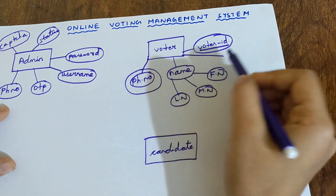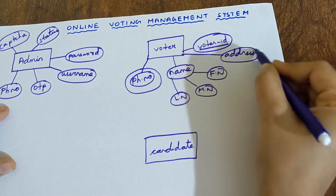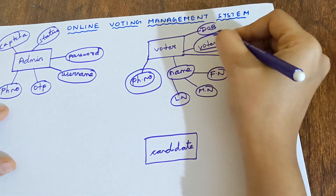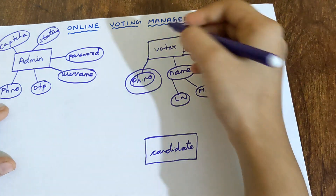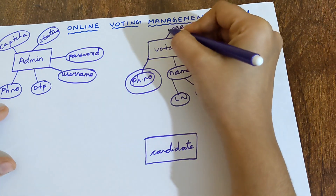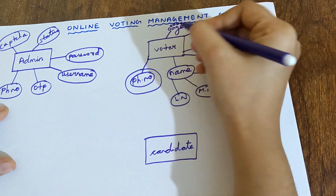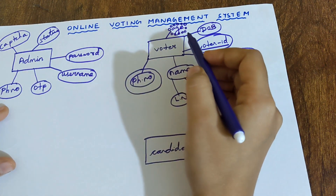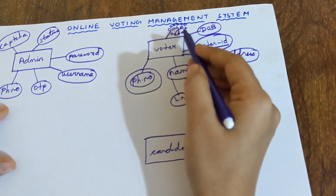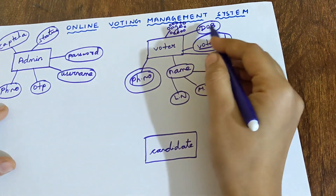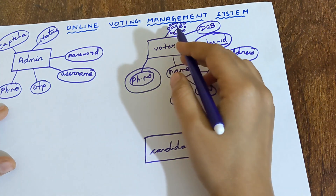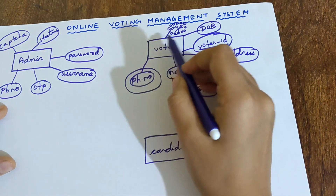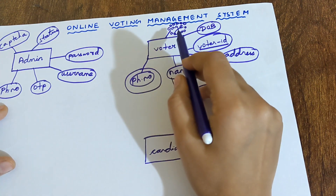Next is the address of the Voter. Next is the date of birth of the Voter. From the date of birth, we can easily derive the age of the Voter. The age must be written inside a dotted oval. This age is known as a derived attribute because from date of birth you are able to derive the age — that is the reason why it is written inside the dotted oval.